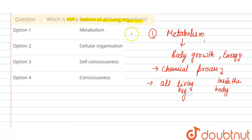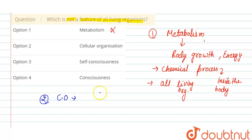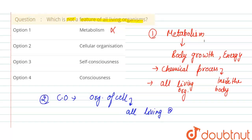The second option is cellular organization. Cellular organization is the organization of cells, which is also present in all living organisms. So this is also an incorrect option.